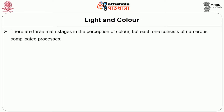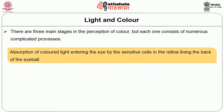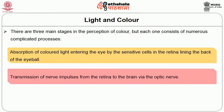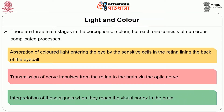There are three main stages in the perception of color, but each one consists of numerous complicated processes: absorption of colored light entering the eye by the sensitive cells in the retina lining the back of the eyeball; transmission of nerve impulses from the retina to the brain via the optic nerves; and interpretation of these signals when they reach the visual cortex in the brain.